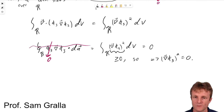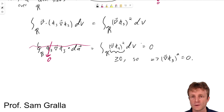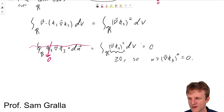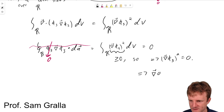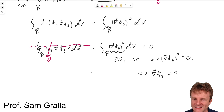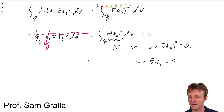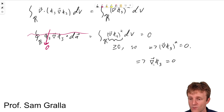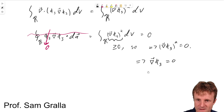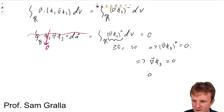This is a very important point: you can only make this kind of argument when you know the thing inside the integral is greater than or equal to zero. That's why we went through all this trouble to do this particular integral. And so now we're on the home stretch: we've learned that grad phi 3 squared is zero, and if a vector squared is zero, the vector itself must be zero, so grad phi 3 equals zero.